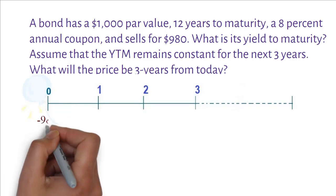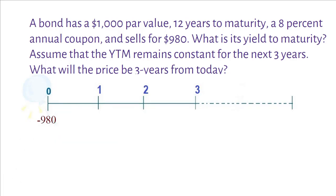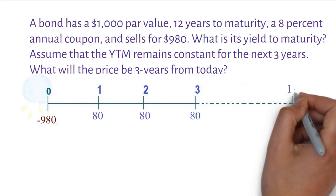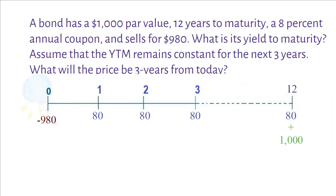Current market price or PV is 980. Par value or FV is 1,000. Coupon amount is 0.08 times 1,000 equals 80. Maturity of the bond is 12 years. First, what we don't know is the YTM or required rate of return.